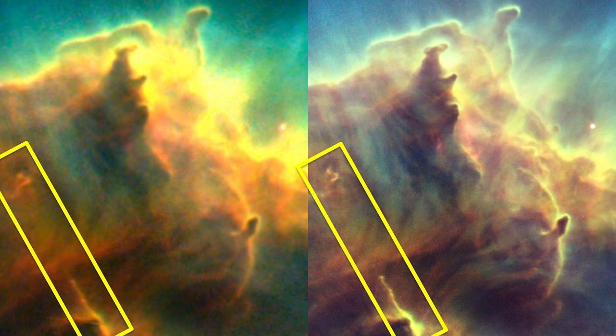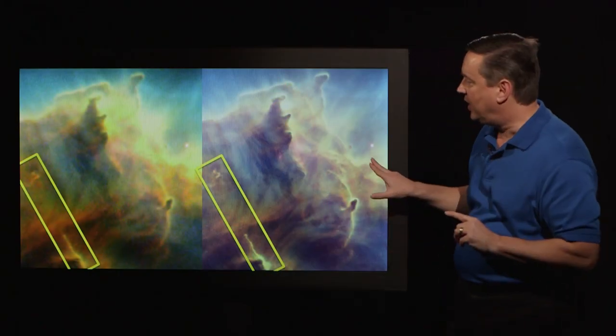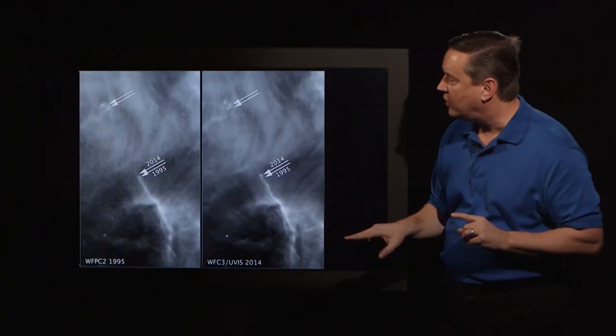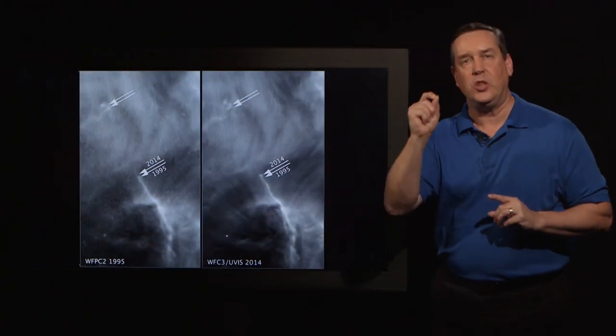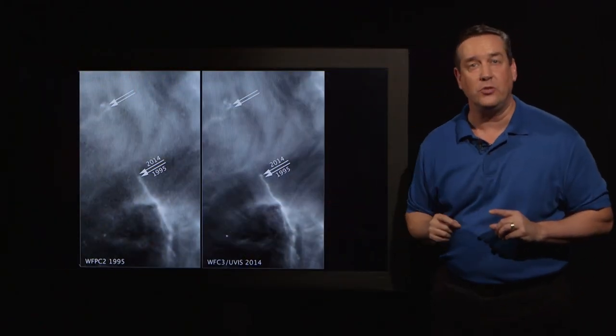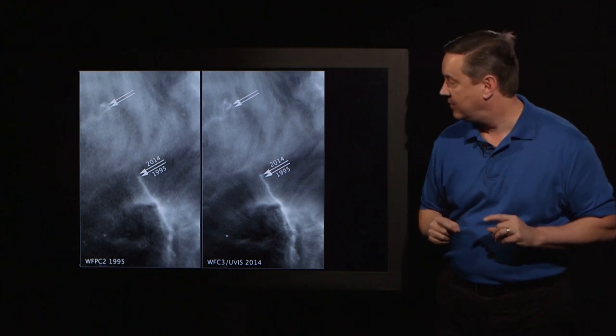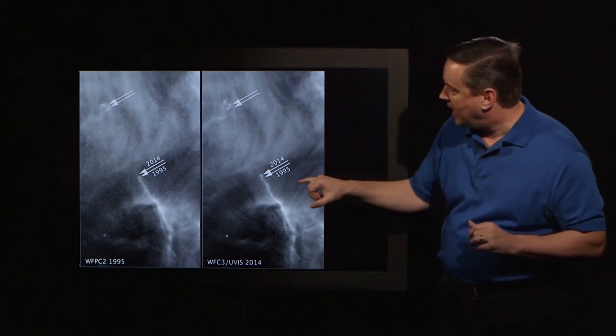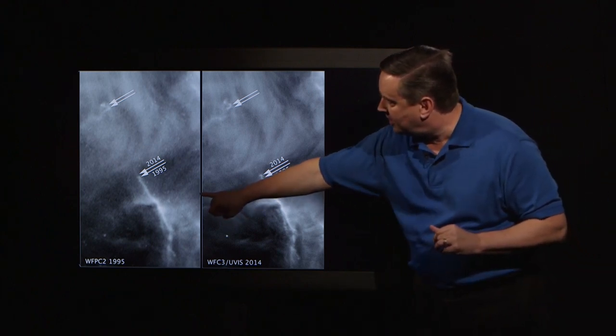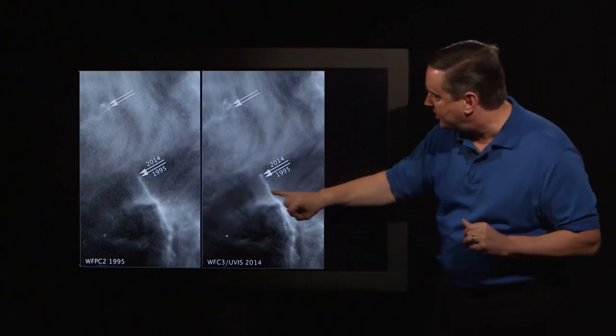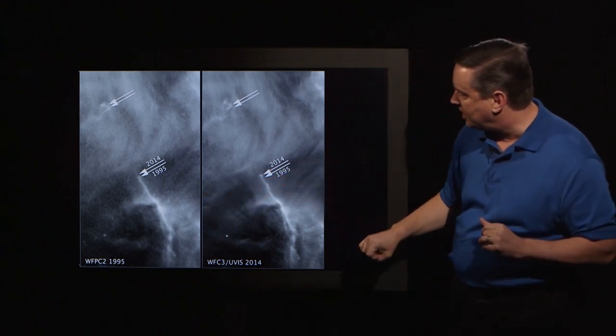And these jets are moving away from the star at about half a million miles an hour. And if we compare them carefully, we can actually see the motion of those jets. Here is the 1995 image and the 2014 image.